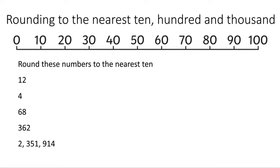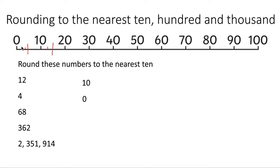Let's have a look at a few examples — rounding to the nearest 10. Round these numbers to the nearest 10. We've got a number line 0 to 100. Let's have a look at where the number 12 would be — it's going to be between 10 and 20. It is definitely below 15, so we would round it down to 10. Then if we looked at number 4, that lies between 0 and 10. That is below our halfway mark, which is 5. It's below 5, so we round it down to 0 — it's closer to 0 than it is to 10.